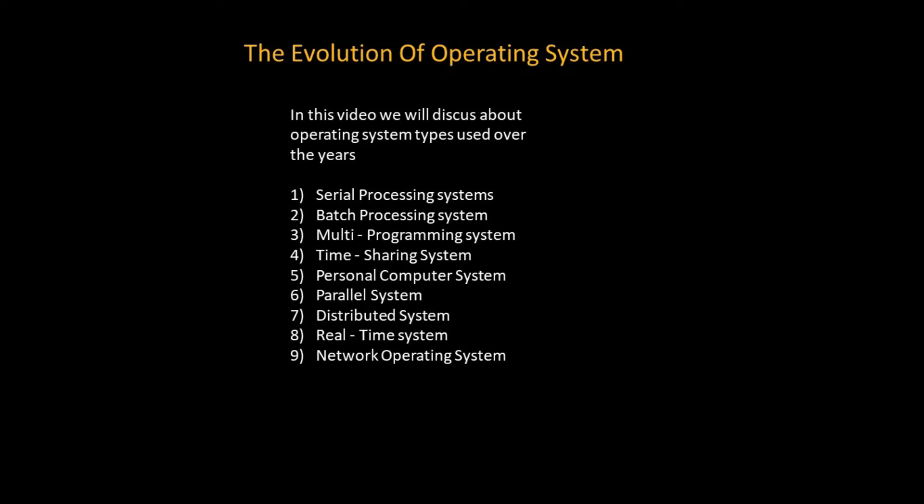Some of these operating system types were: serial processing systems, batch processing systems, multiprogramming systems, time-sharing systems, personal computer systems, parallel systems, distributed systems, real-time systems, and network operating systems.